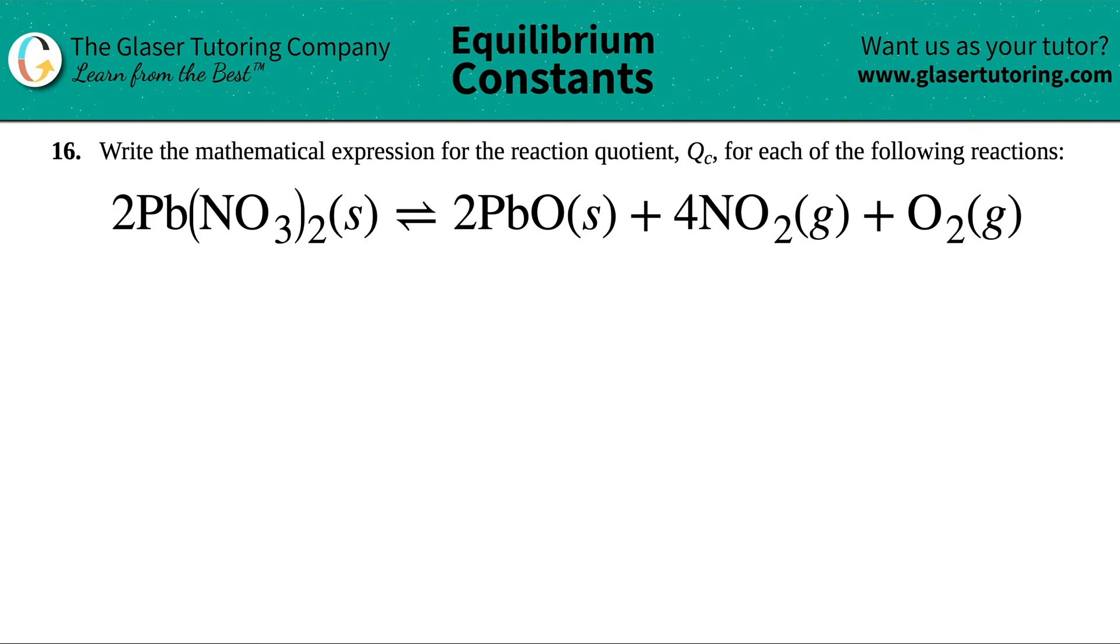Number 16. Write the mathematical expression for the reaction quotient QC for each of the following reactions, and then we have this one right here. So I need to write the QC for 2Pb(NO3)2 solid, which comes to equilibrium with 2PbO solid plus 4NO2 gas plus O2 gas.